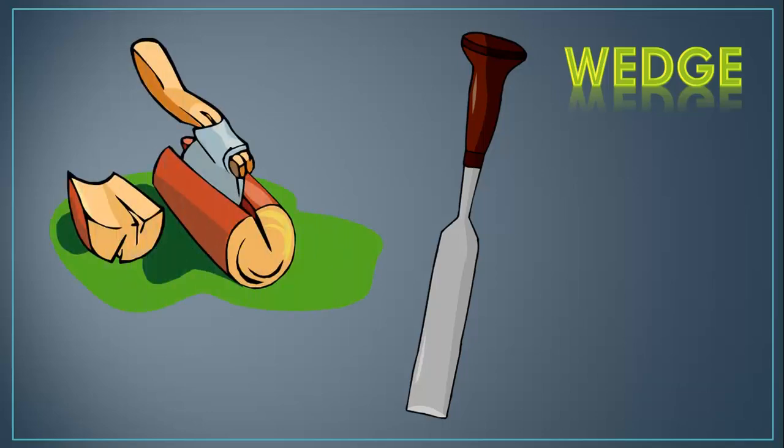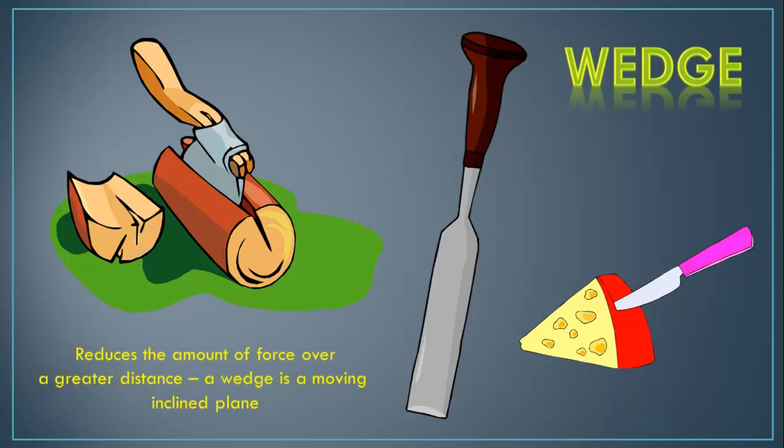The wedge is another simple machine. And here are a few examples. A chisel is an example of a wedge. An axe cutting through a piece of wood is also an example of a wedge. And also using a knife to slice through anything, like a piece of cheese or any other food that you're trying to cut. The wedge reduces the amount of force over a greater distance again. A wedge is simply a moving inclined plane. Again, making work easier.